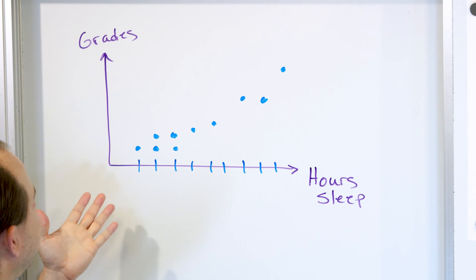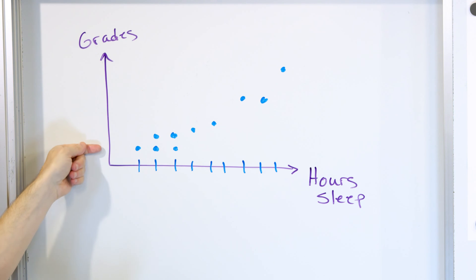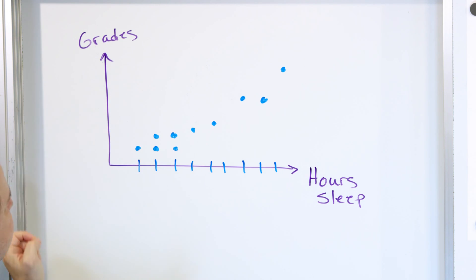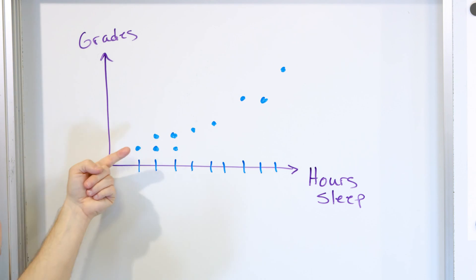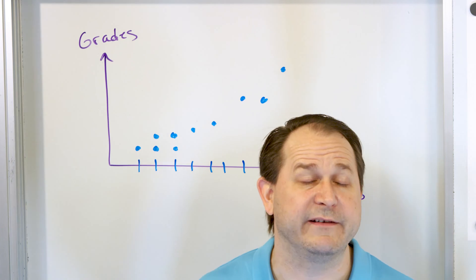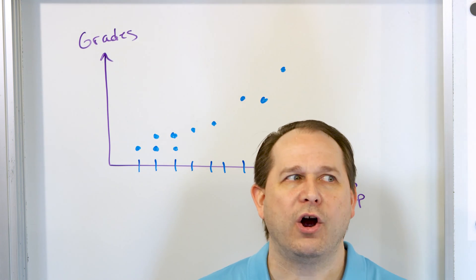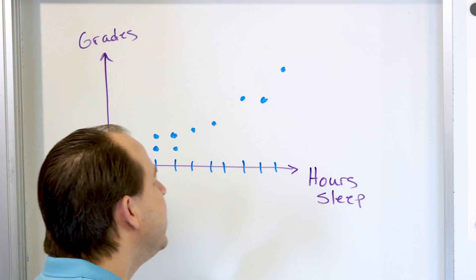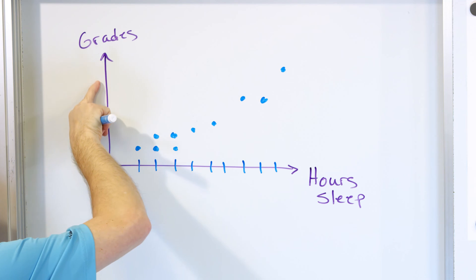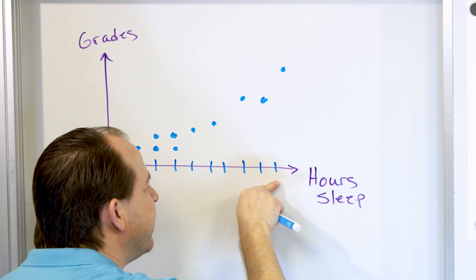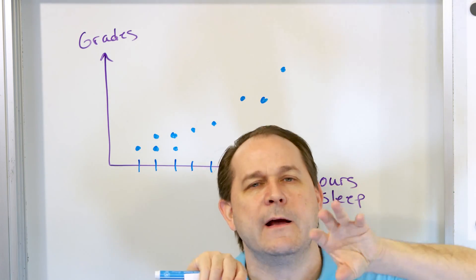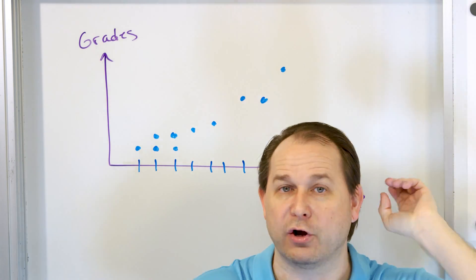It's not a straight line, but to get the idea — when someone has very few hours of sleep, maybe one or two or three hours, they get low grades. Here are two different people with maybe two hours of sleep and their grades were a little different from each other, but very close to the same. As the number of hours of sleep goes up, the grades also go up. This is called a scatter plot, and we're going to draw a lot of them.